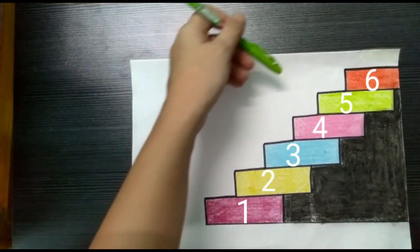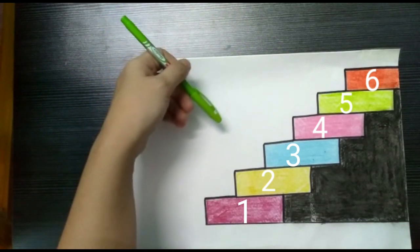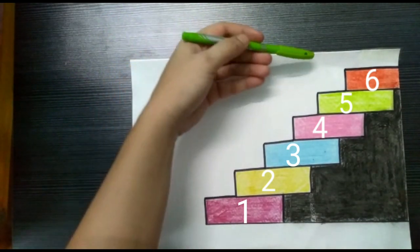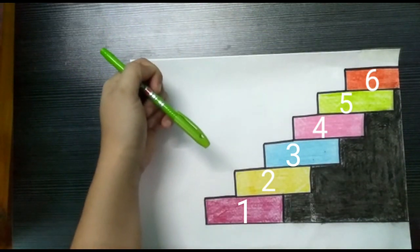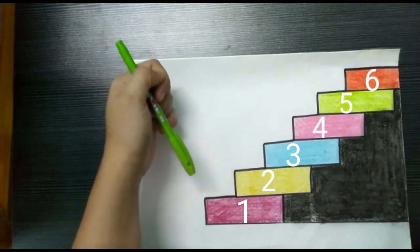Children, can you see the stairs? Each stair has a number from 1 to 6. Today, we will learn about descending order.